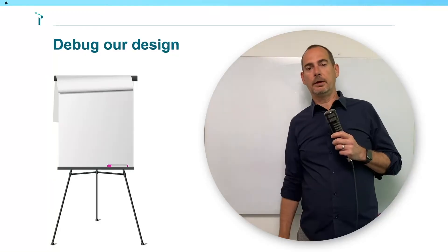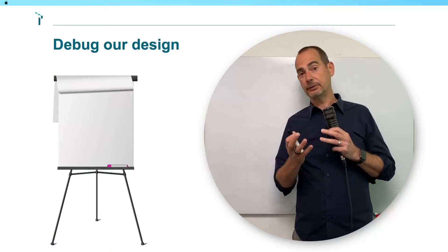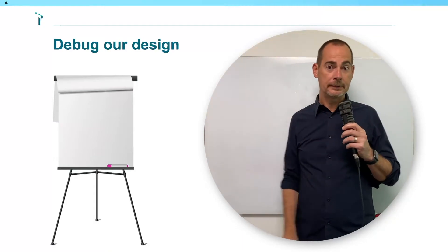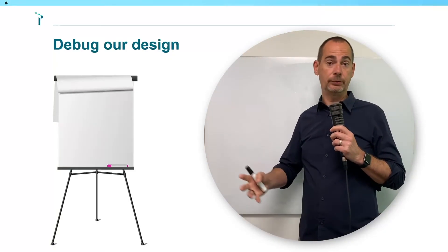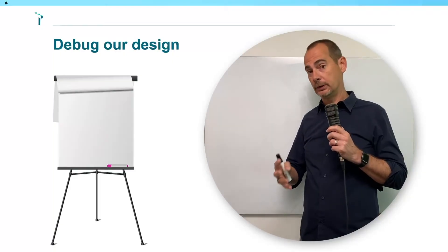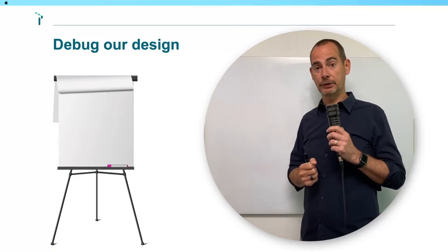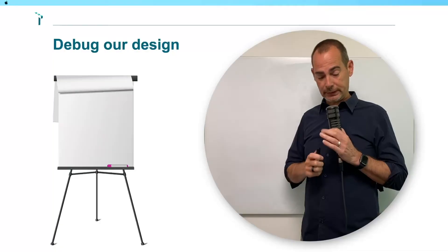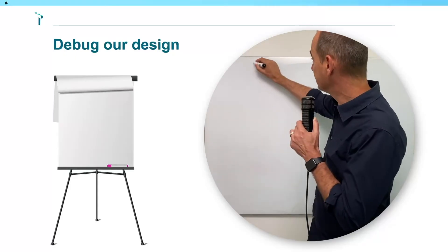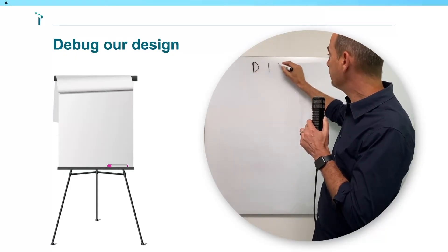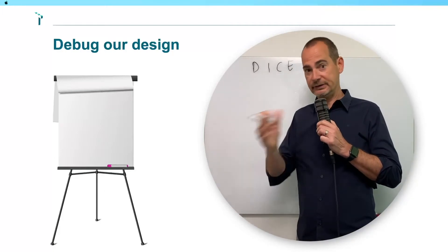Enough talking — let's debug our design. That's actually what threat modeling is about. What we need here is a whiteboard, a flip chart, or a piece of paper. You'll have to talk this through with your colleagues, your security team, or an AppSec champion — involve them as part of your design. So let's recap the DICE steps: Diagram, Identification of threats, Countermeasures, and Evaluation. That's exactly what we're going to do here.